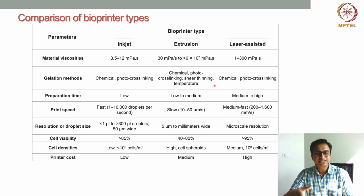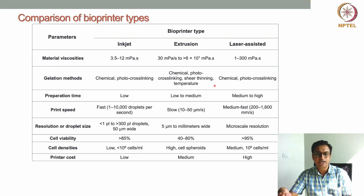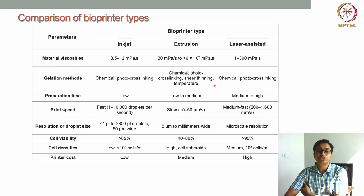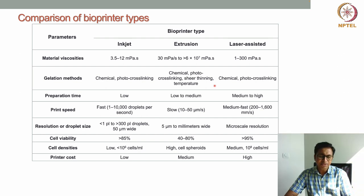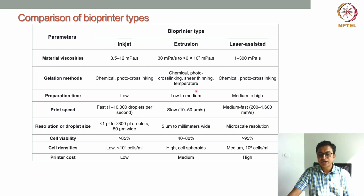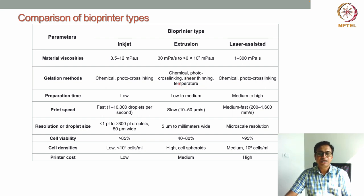Temperature-induced cross-linking is another option. For example, gelatin has a critical transition temperature around 30°C — above 30°C it behaves like a fluid, but below 30°C it behaves like a gel. During printing the temperature can be maintained above 30°C so the material comes out easily, but then collected on a stage maintained below 30°C, which solidifies the gelatin. Various such materials are available for extrusion-based bioprinting.